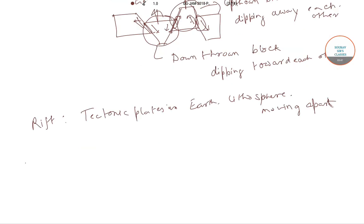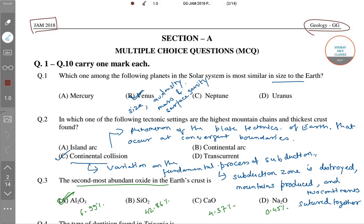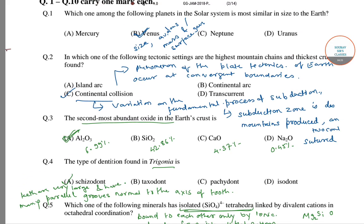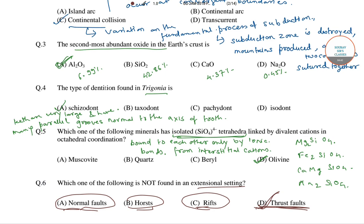And the next one, thrust fault. It is a break in Earth's crust across which older rocks are pushed above the younger rocks. As we can see, among these four options, normal fault, horst, and rift are found in an extensional setting. But thrust fault is not found in an extensional setting. So the correct option is option number D.